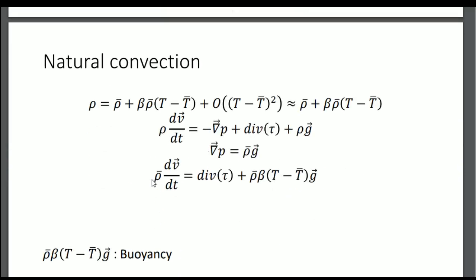For natural convection, we apply the Boussinesq hypothesis. We split density rho into two terms via a Taylor expansion: rho equals rho-bar plus beta times rho-bar times (T minus T-bar), plus a big-O of the square of the temperature differential. We then approximate by neglecting this higher-order term.